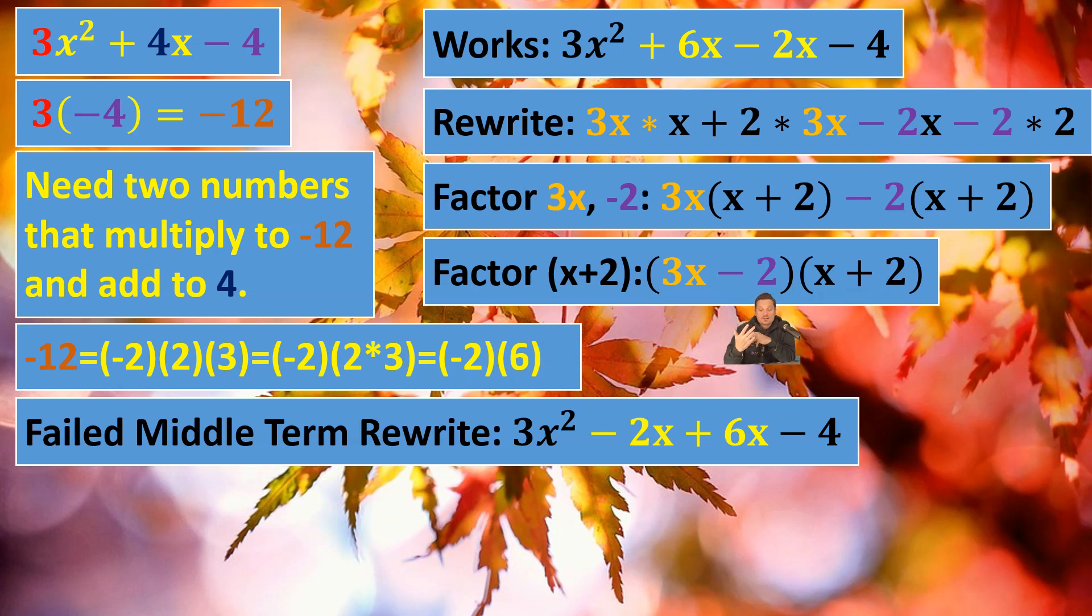To check factoring, what we always do, of course, is you just foil. So if you foil 3x - 2 with x + 2, you will see you should restore the original expression, which is 3x² + 4x - 4. So foil, and you will see it works.